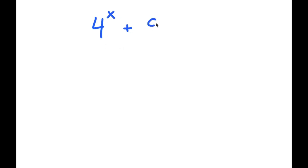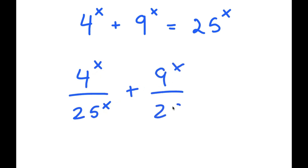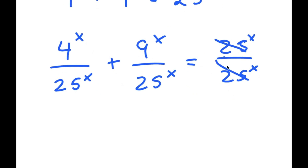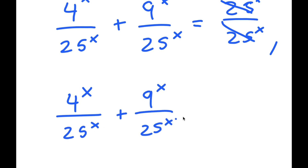In this video, I'm going to solve the equation 4 to the power of x plus 9 to the power of x is equal to 25 to the power of x. To solve this, I'm going to start by dividing every term by 25 to the power of x. So I get 4 to the power of x divided by 25 to the power of x, plus 9 to the power of x divided by 25 to the power of x, is equal to 1.